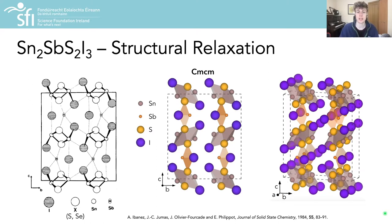From some XRD analyses from the 1980s, the crystal structure was determined to have the orthorhombic Cmcm space group with these infinite chains of tin, sulfur, and iodine along the crystal A direction, with iodine and antimony located between the atomic chains.